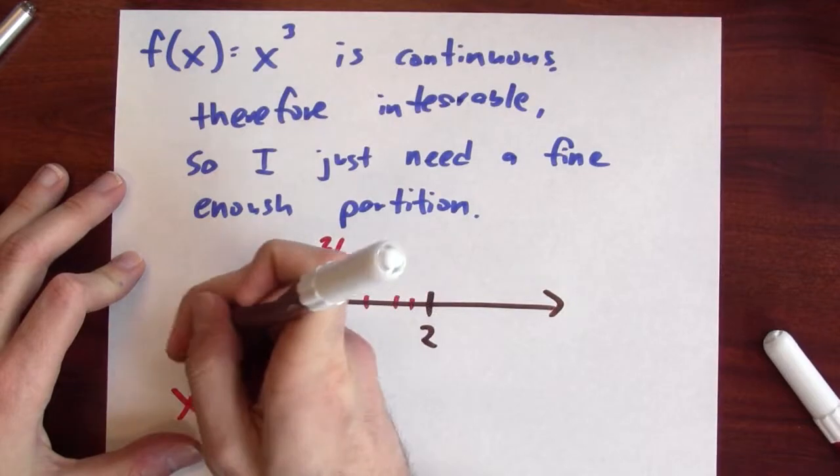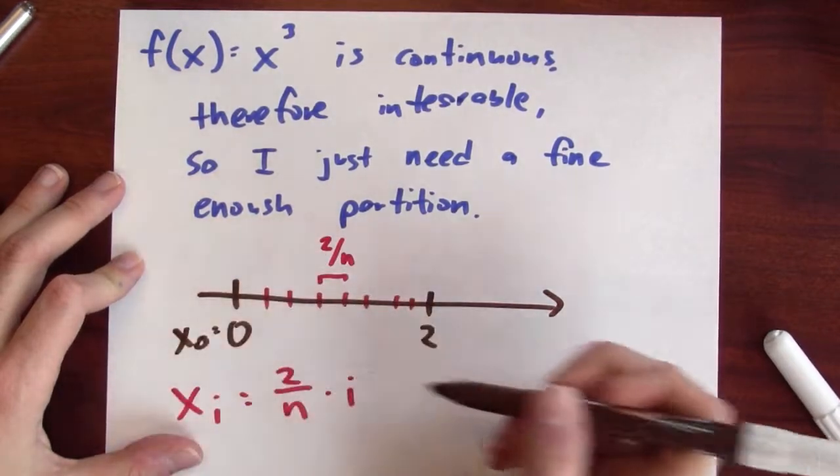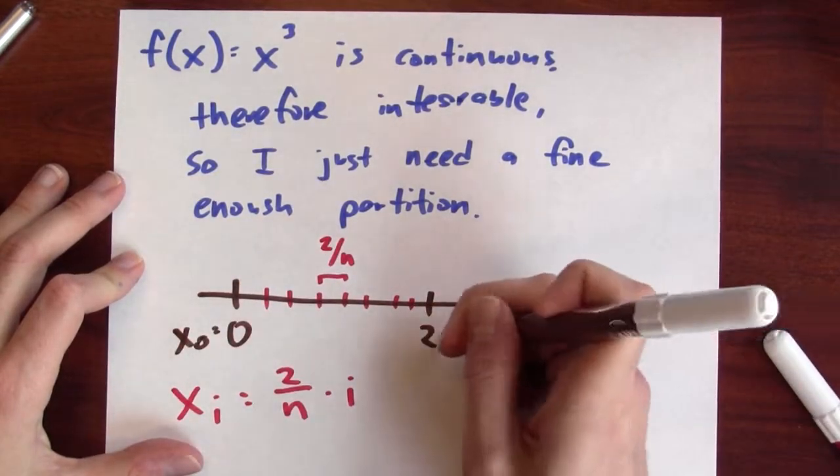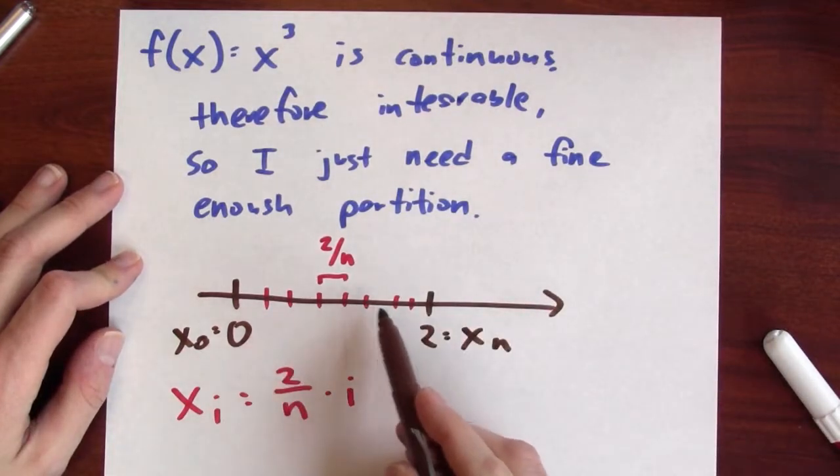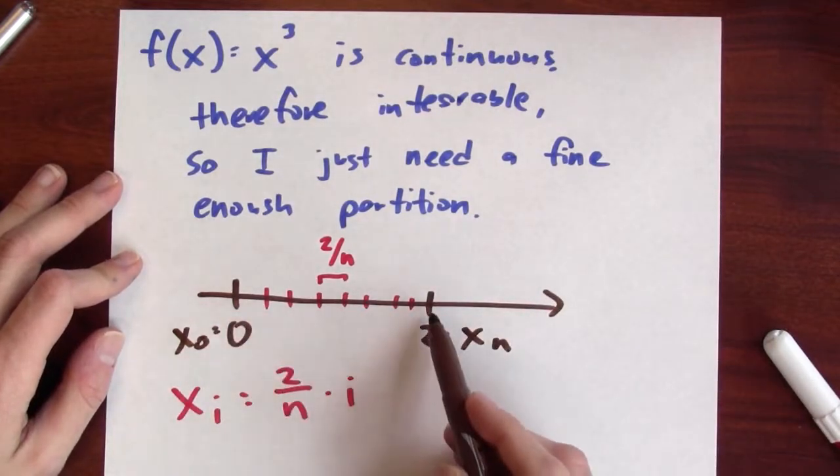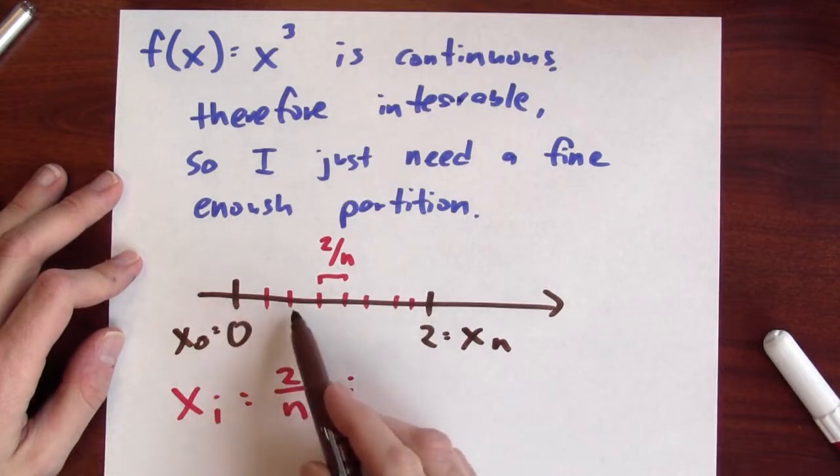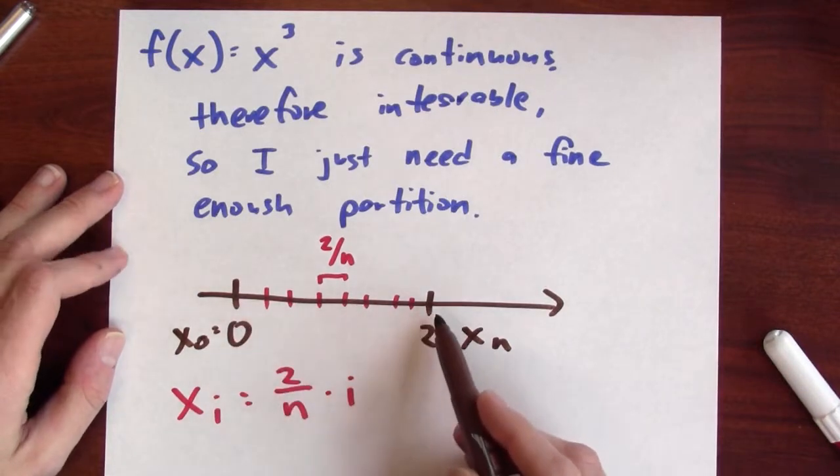If i is 0, then I'm at the left-hand endpoint. And if i is n, I'm at the right-hand endpoint. And in between, I'm just marching from the left-hand side to the right-hand side, moving 2 over n each time.